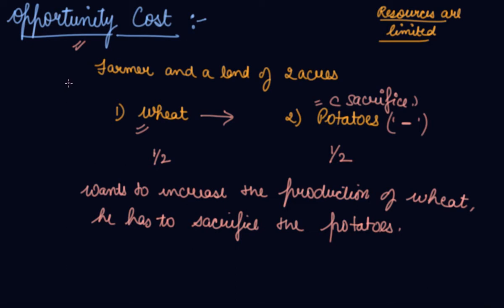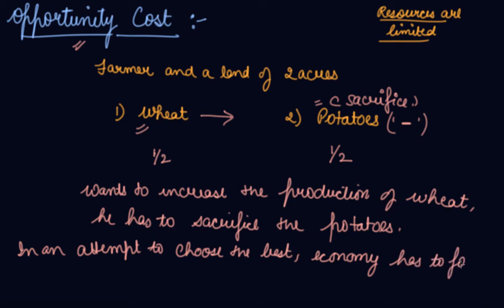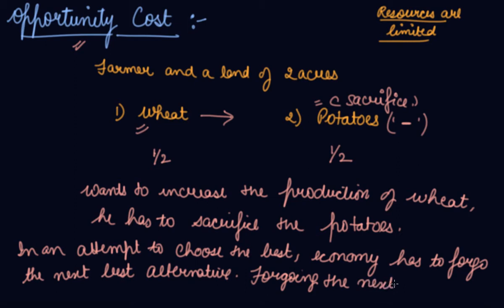The economy has to choose from among the available alternatives. In an attempt to choose the best alternative, the economy has to forgo the next best alternative. Forgoing the next best alternative is the opportunity cost.